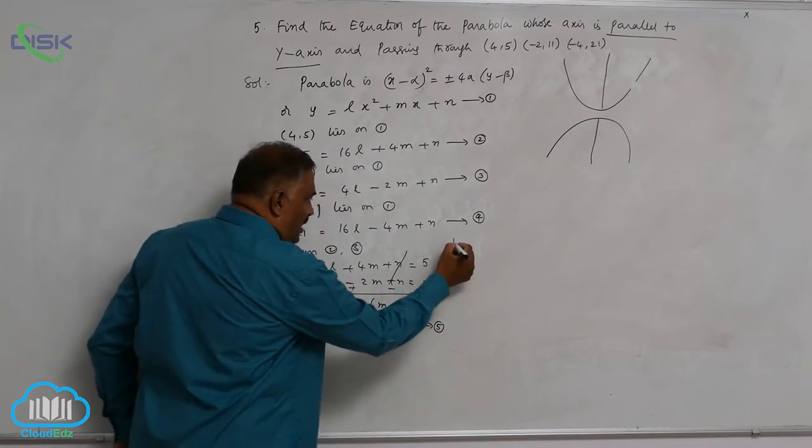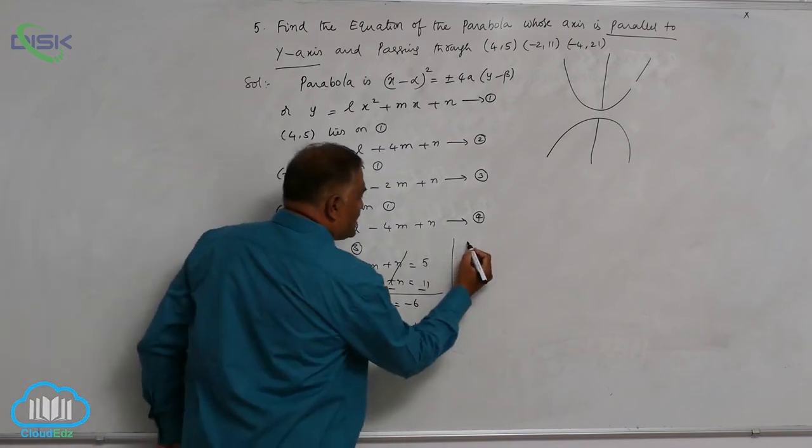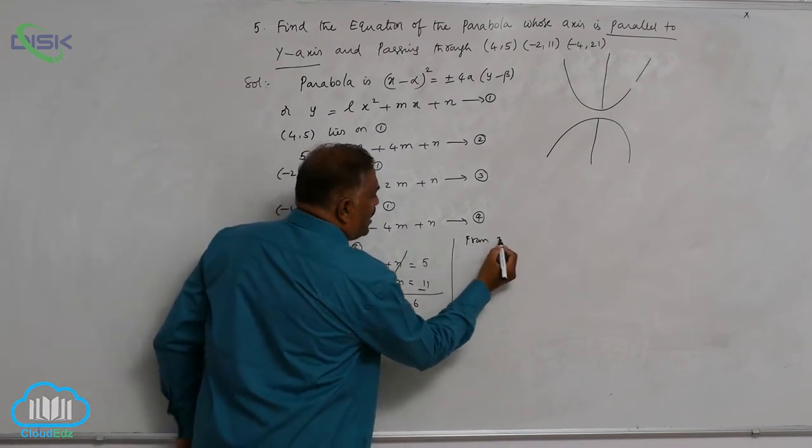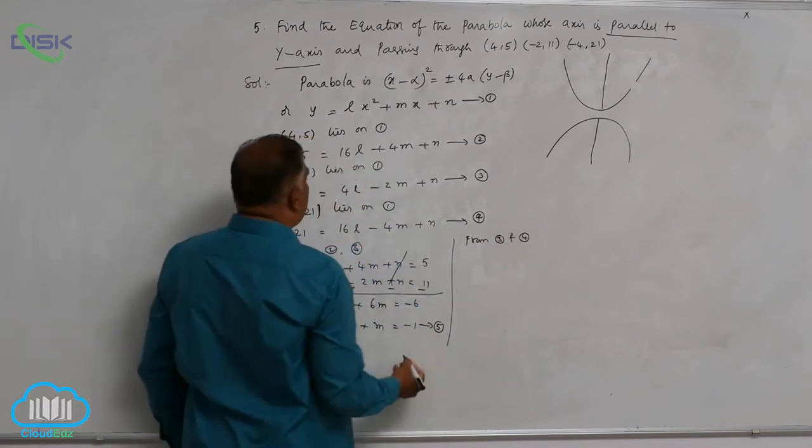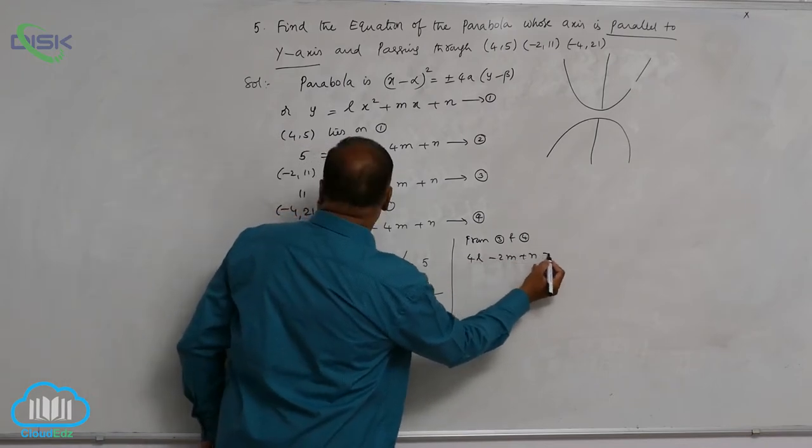Now take equation 3 and 4. This is from 3 and 4. Now 4l minus 2m plus n is equal to 11.